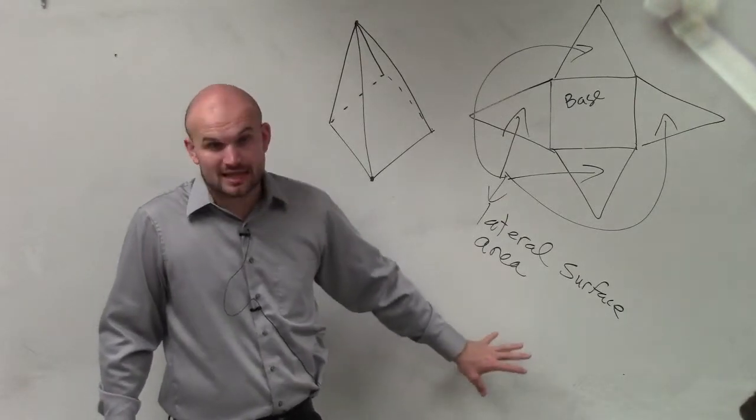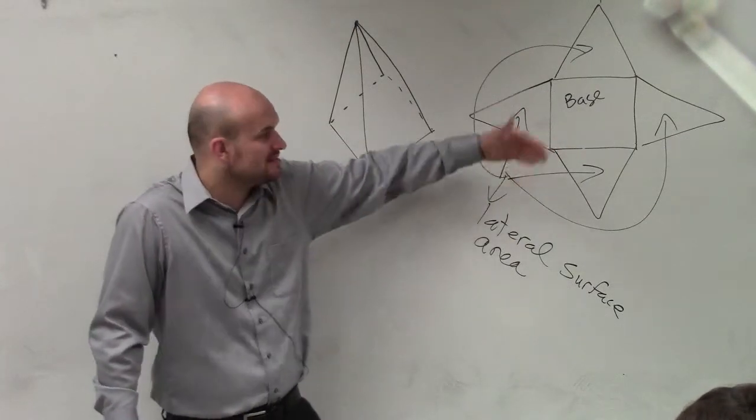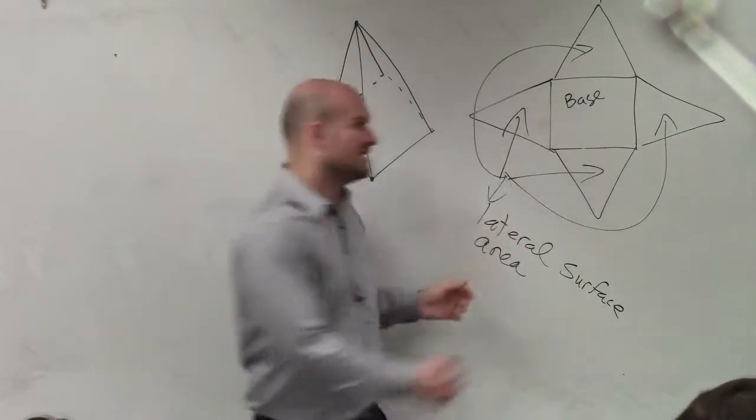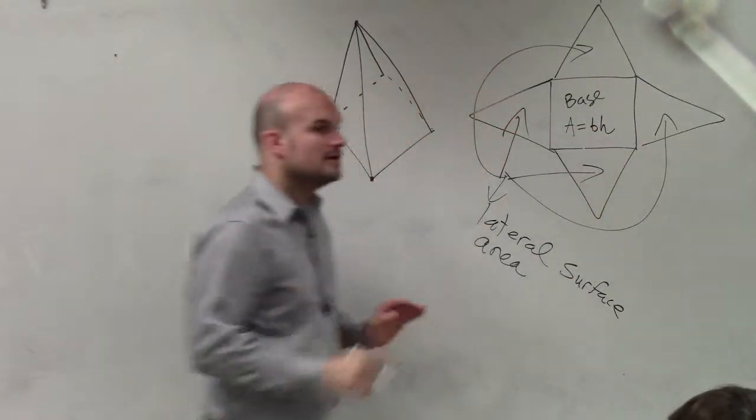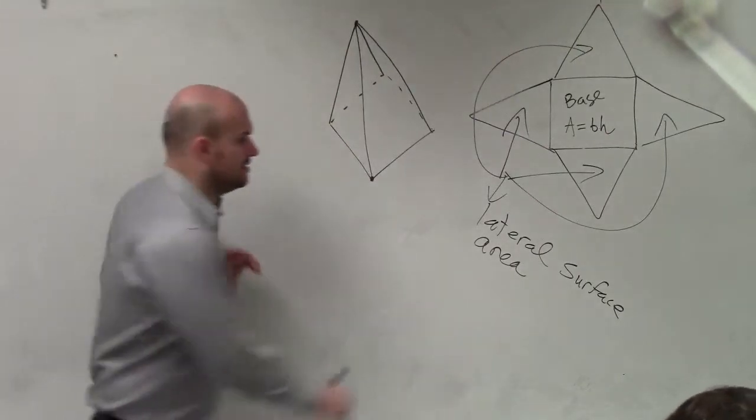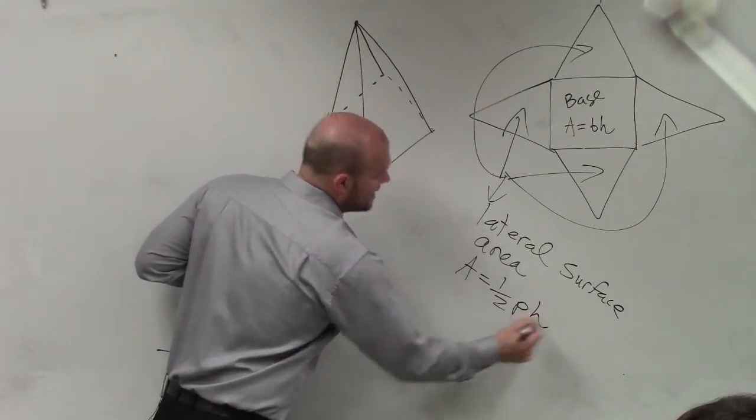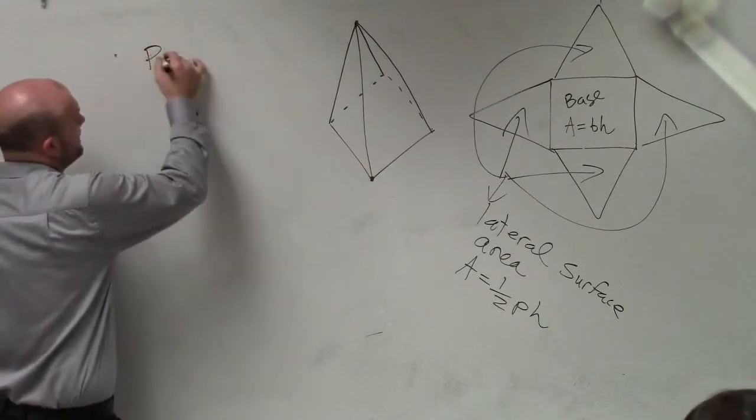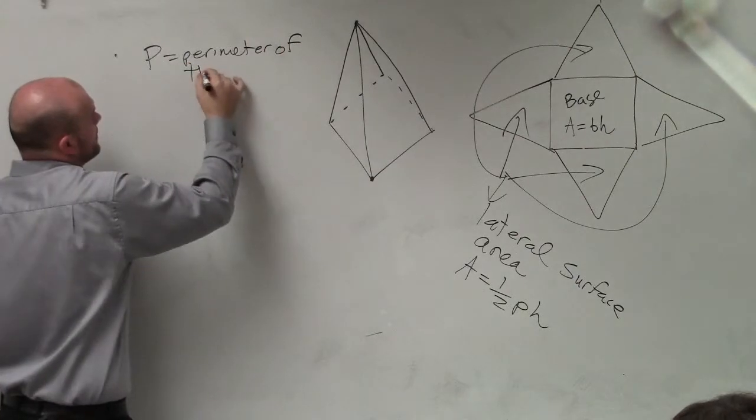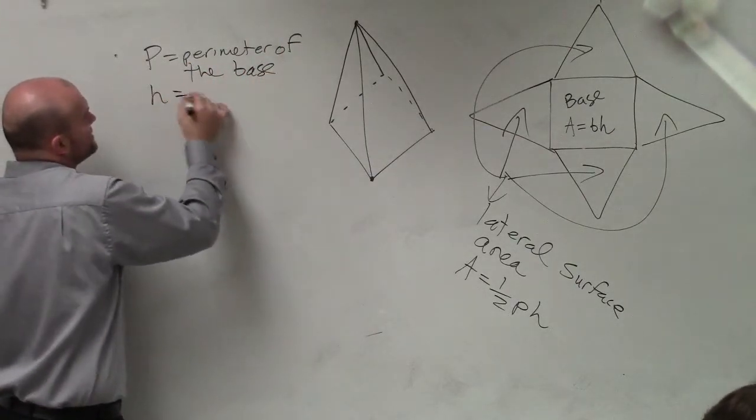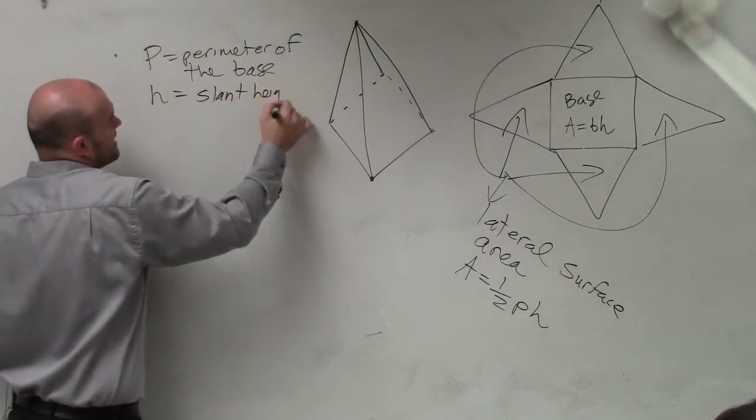Now, to find the lateral surface area, so we know the base. The base is going to be, if we're dealing with a prism that has a rectangular base, you guys know how to find the area of this. That's pretty easy. Area equals base times height. To find the lateral surface area, it's going to be area equals one-half p times h, where p is equal to the perimeter, and h is equal to the slant height.